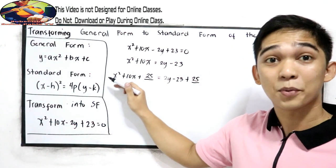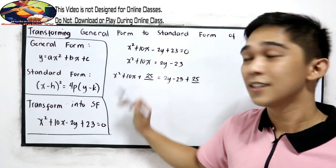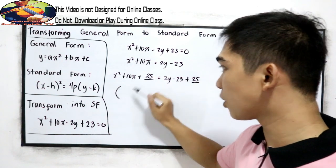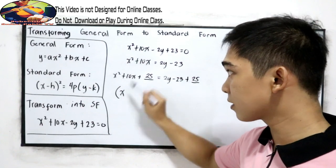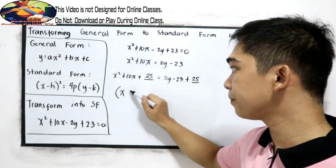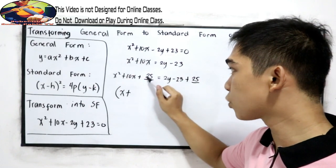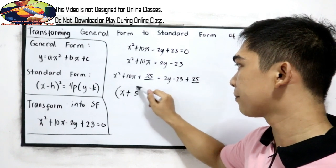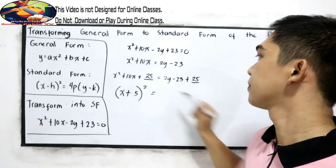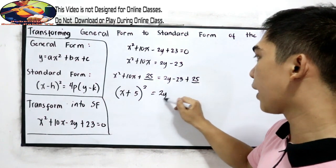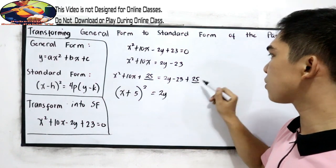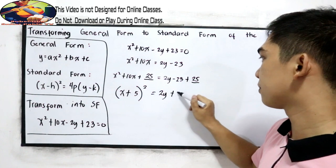Now, this is a perfect square trinomial. So writing the square of a binomial, the square root of x squared is x, copy the sign of the middle term, positive, the square root of 25 is 5, then square. Is equal to, simplify, 2y, negative 23 plus 25, positive 2.